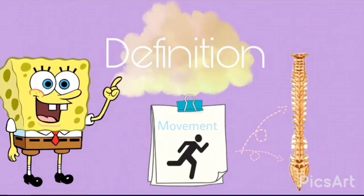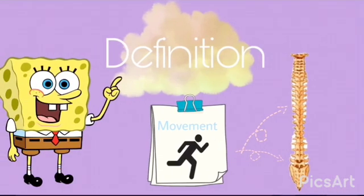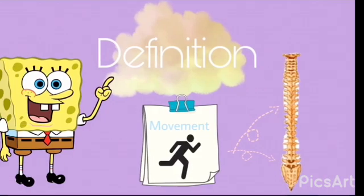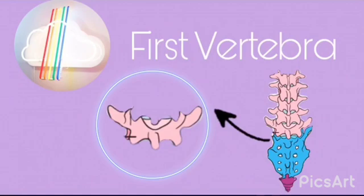The lumbar vertebrae are located in the lumbar region, between the thoracic vertebrae and the sacrum. Like all vertebrae, the lumbar consists of a vertebral body and an arch, which supports the same processes. The spinal foramen is formed, through which the spinal cord runs.